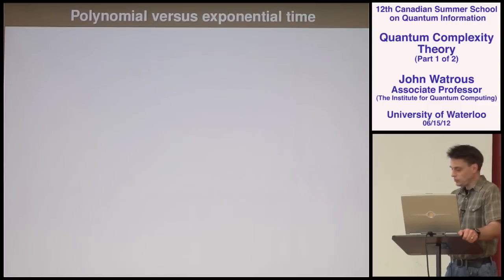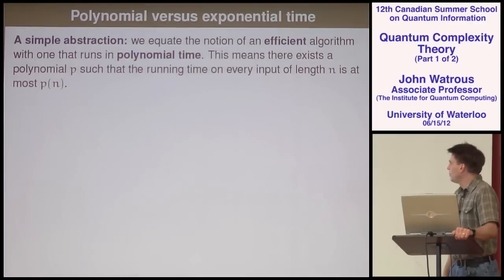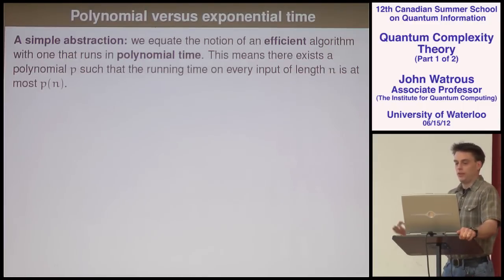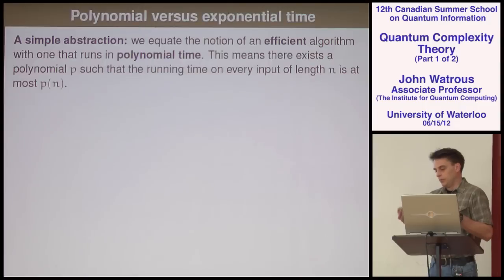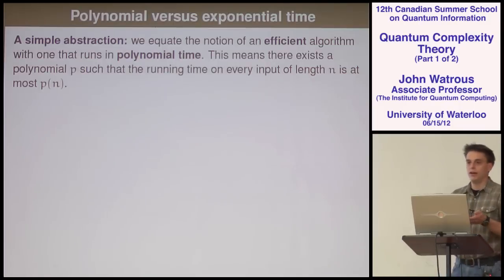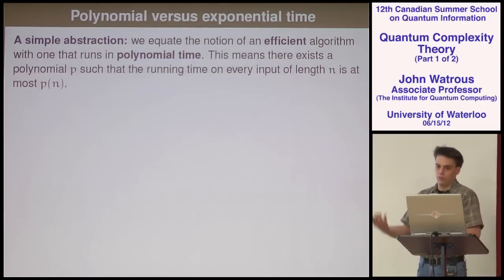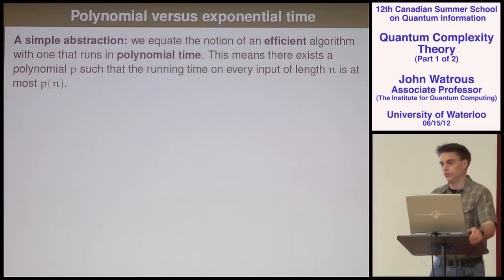We use the abstraction that an efficient algorithm is one that runs in a number of steps that's polynomial in the length of the input. The algorithm takes some number of basic steps, and we think of it as efficient if that number is bounded by some fixed polynomial in the input length. So if the input length is n and your algorithm runs in roughly n cubed steps, that's a polynomial, so that's efficient. Even n to the 100 or n to the 1 billion — anything where the exponent is a constant.